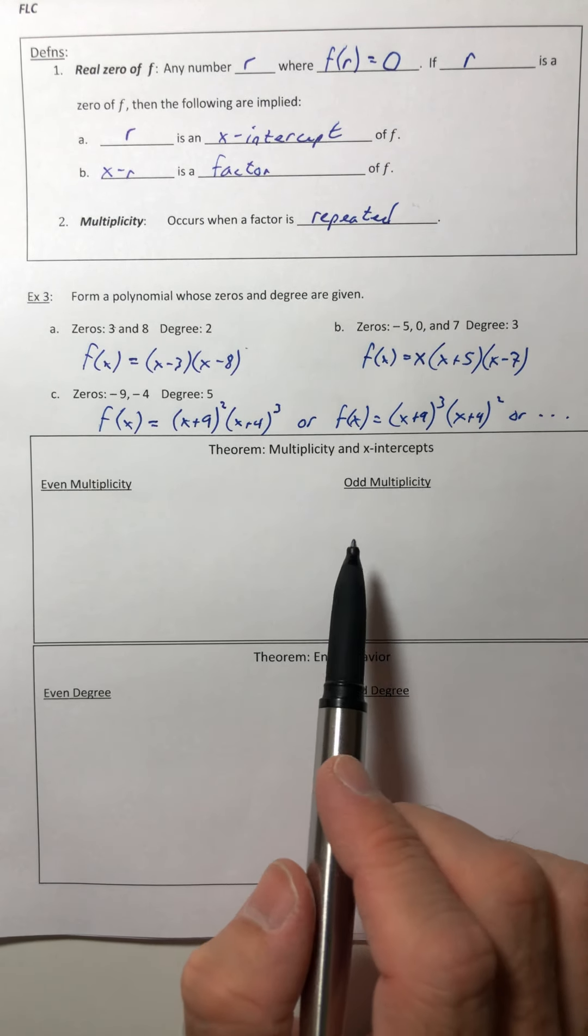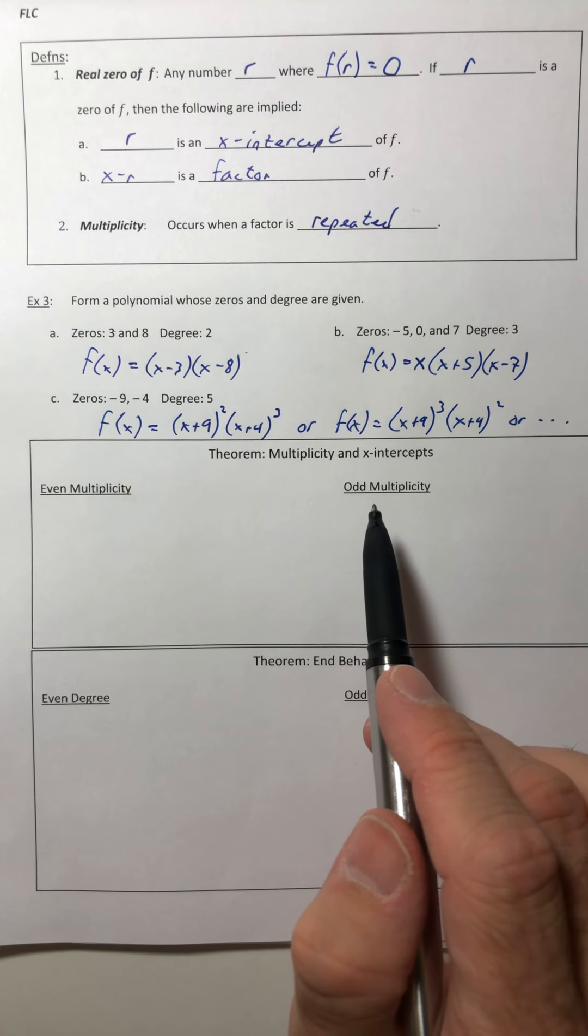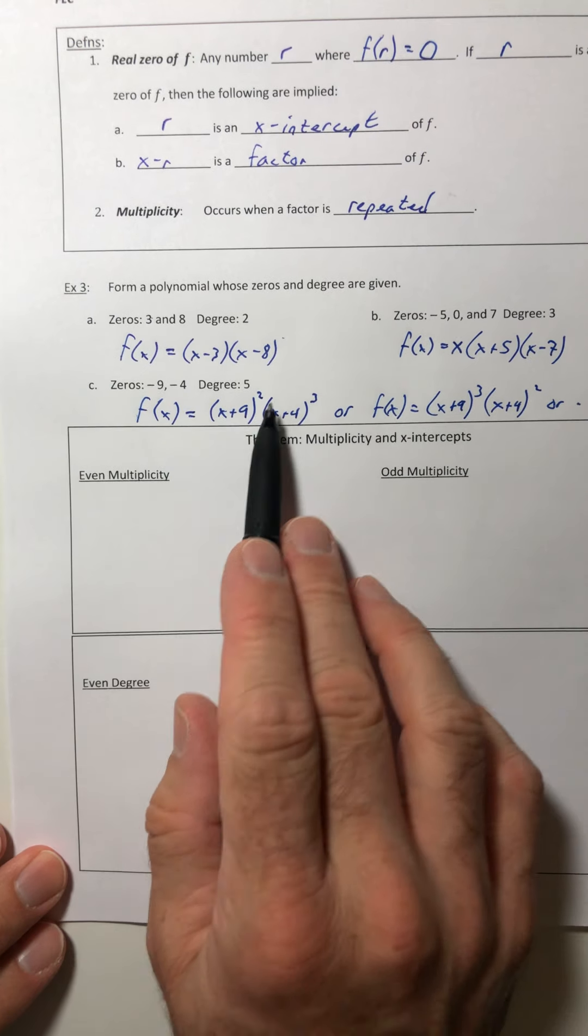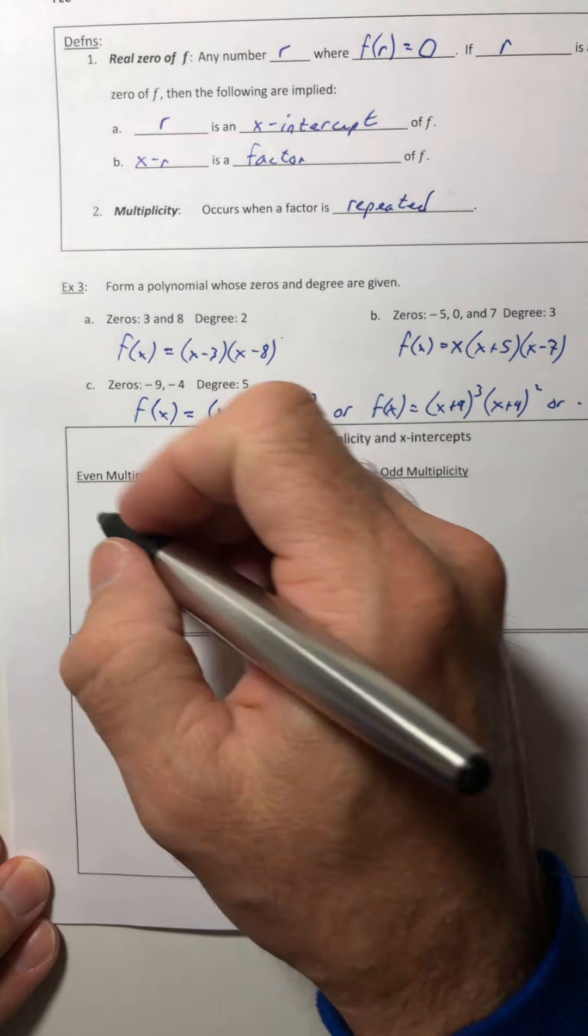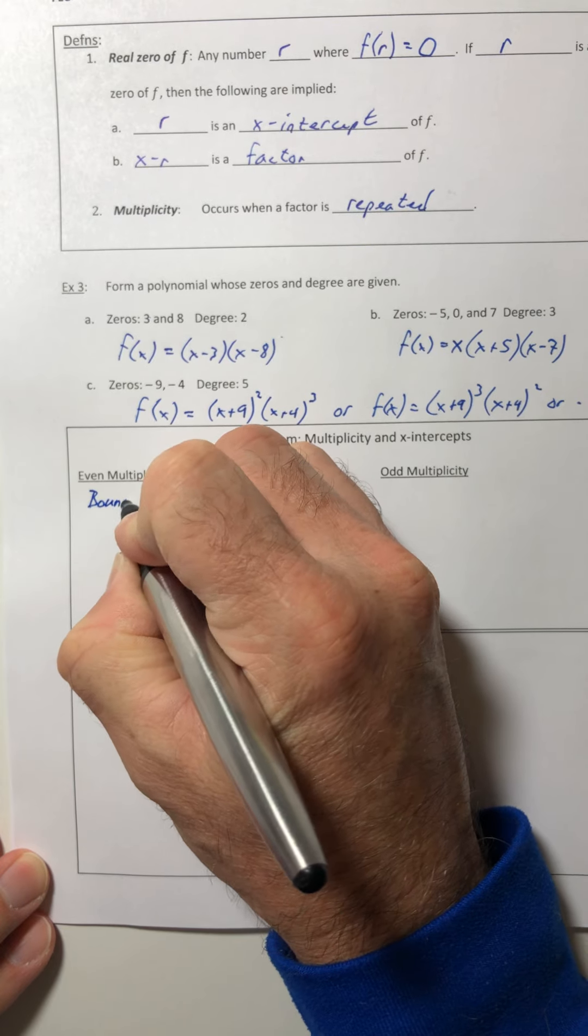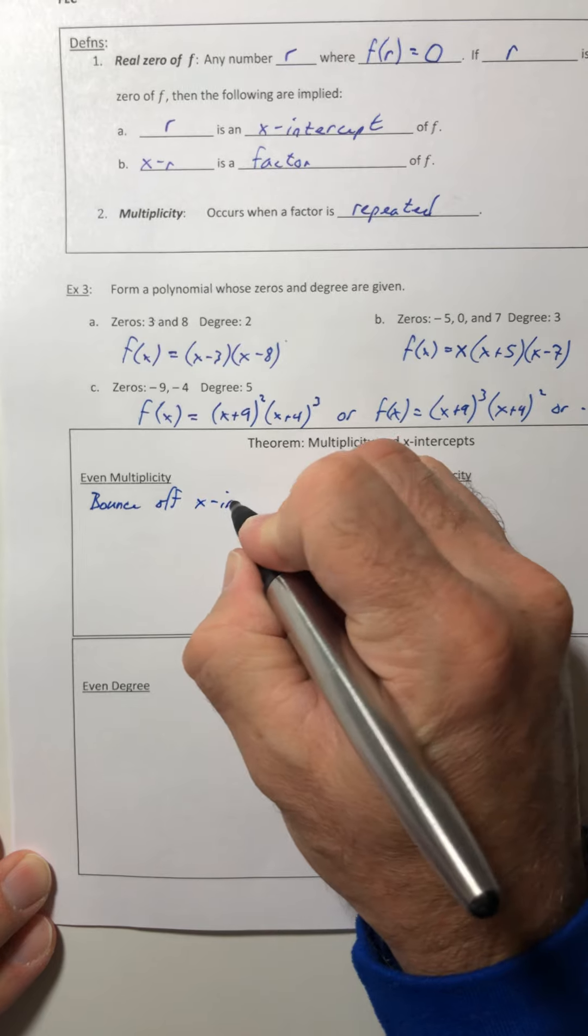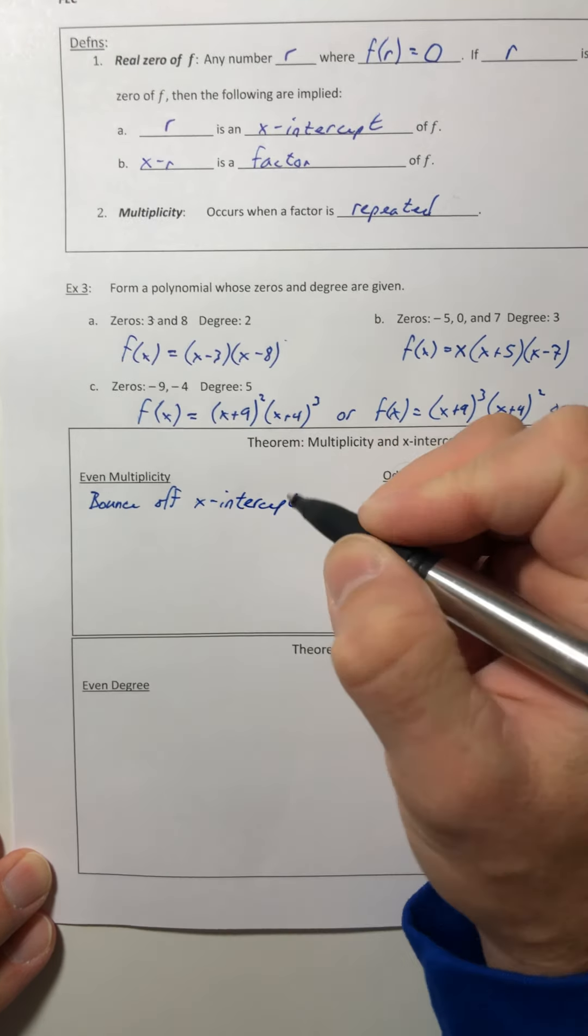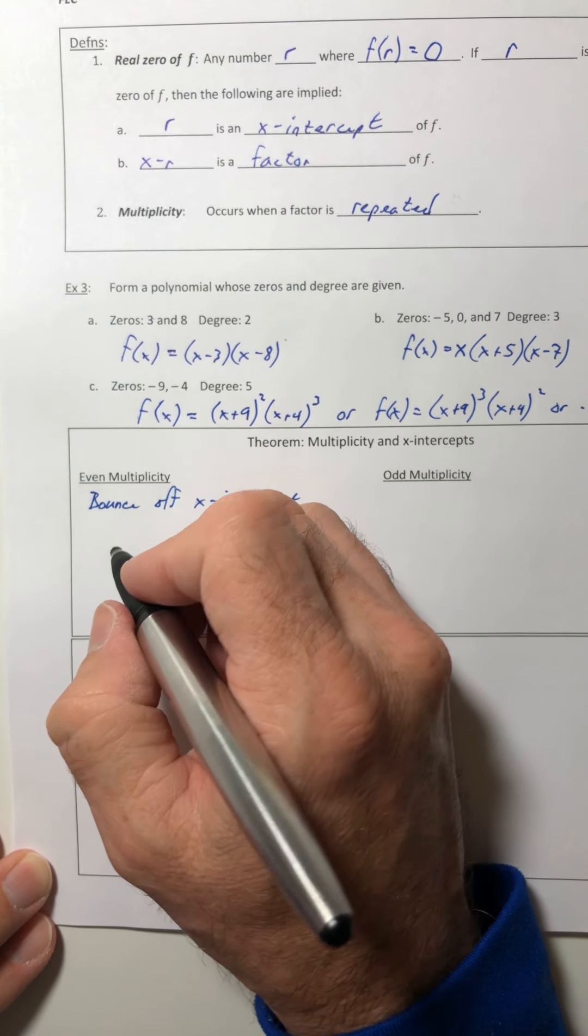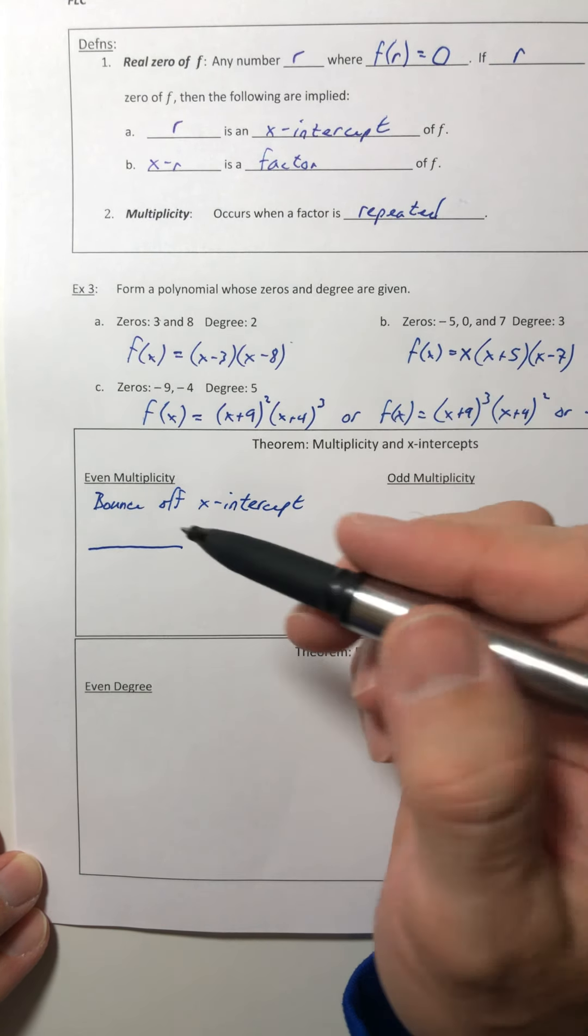All right, so now let's talk about what the multiplicity is going to do to your x-intercepts because it does do something. So for even multiplicity or when that exponent up there is an even number, what that's going to do to it, it makes the curve bounce off your x-intercept. So it's not going to go through it like a normal intercept. It's just going to bounce it.